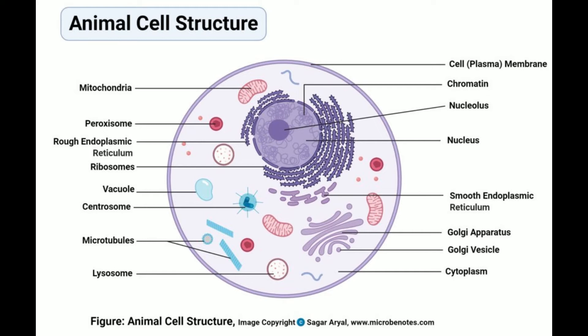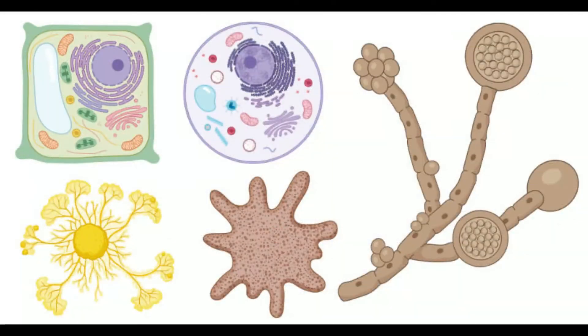Eukaryote Structure: Eukaryotes are much larger in size when compared with prokaryotic cells, having a volume about 10,000 times higher. Eukaryotic cells are formed of a number of membrane-bound and membrane-less organelles. Cell Wall: The cell wall is present in some eukaryotic cells like some protists, fungal, and plant cells. In plants and some protists, the cell wall is made up of cellulose microfibrils and a network of glycans embedded in a matrix of pectin polysaccharides.